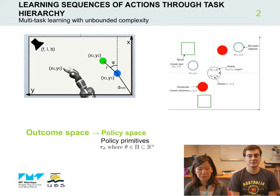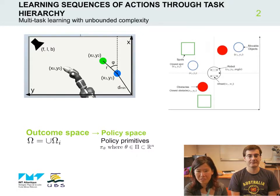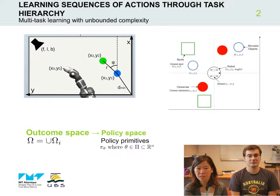In our work, we'd like to address two challenges. First, is to look at the outcomes and use multi-task learning. Instead of a robot learning only to move green objects to one specific position, it needs to learn how to move the object to any position on the table. Also, we don't want to consider only one kind of outcome, but many different kinds of outcomes, like how to produce sounds. So our outcome space will be the union of all of these — composite tasks.